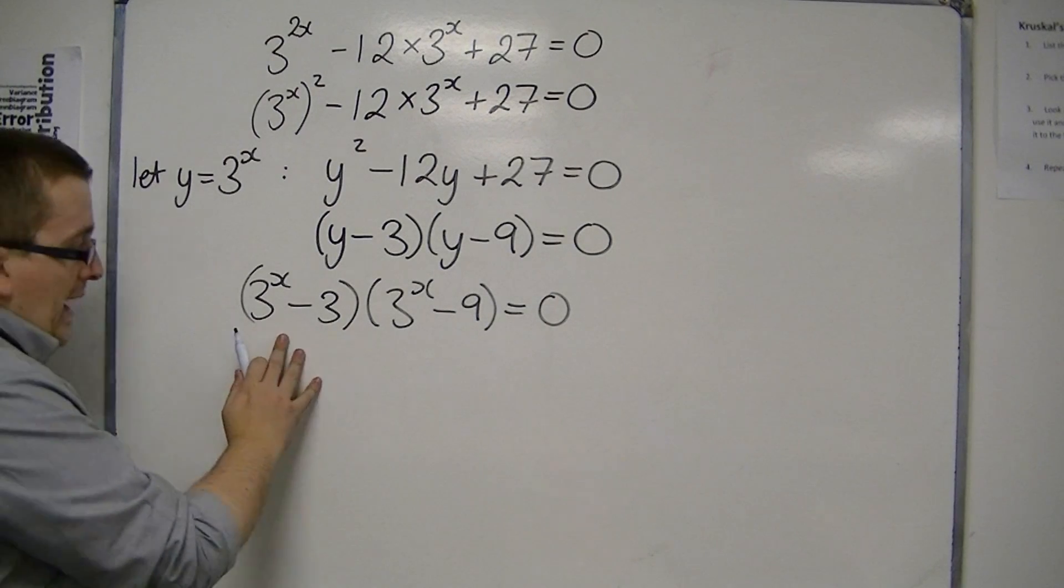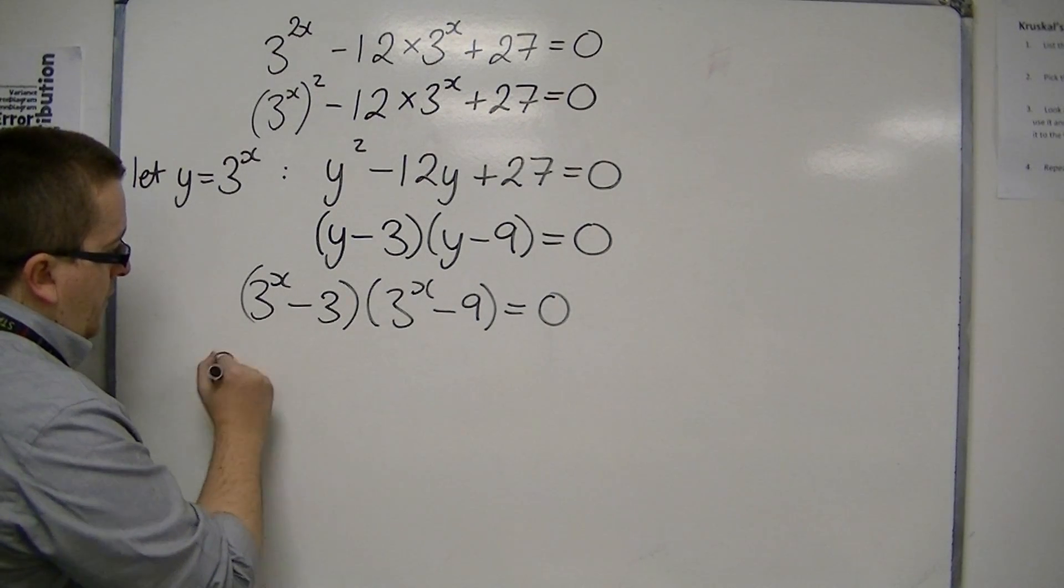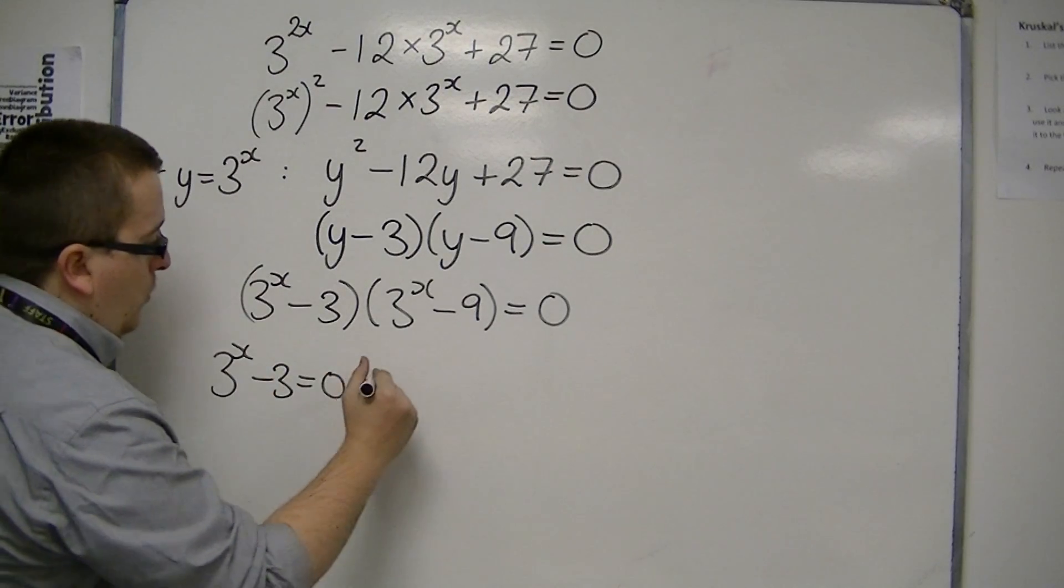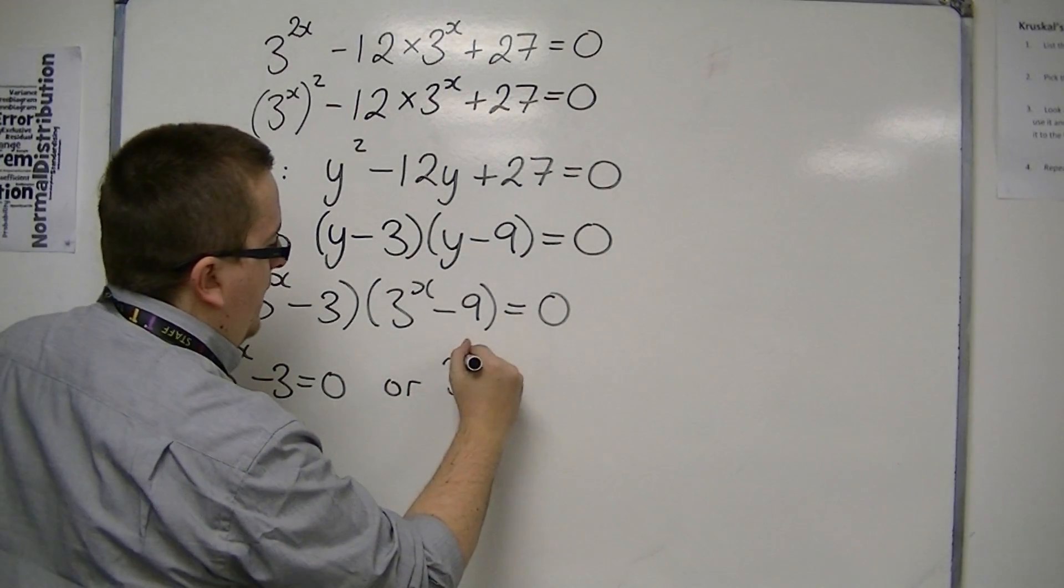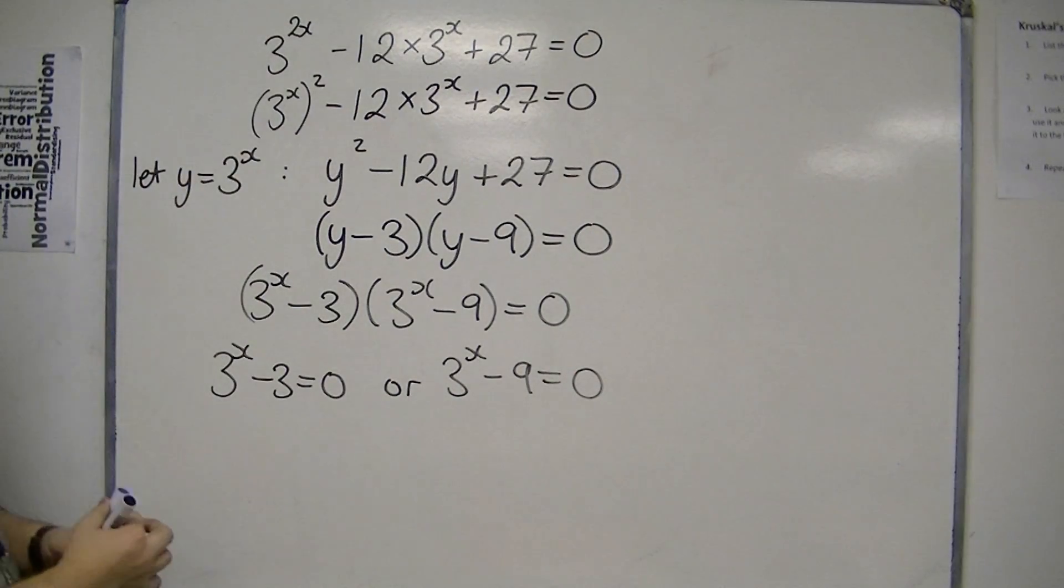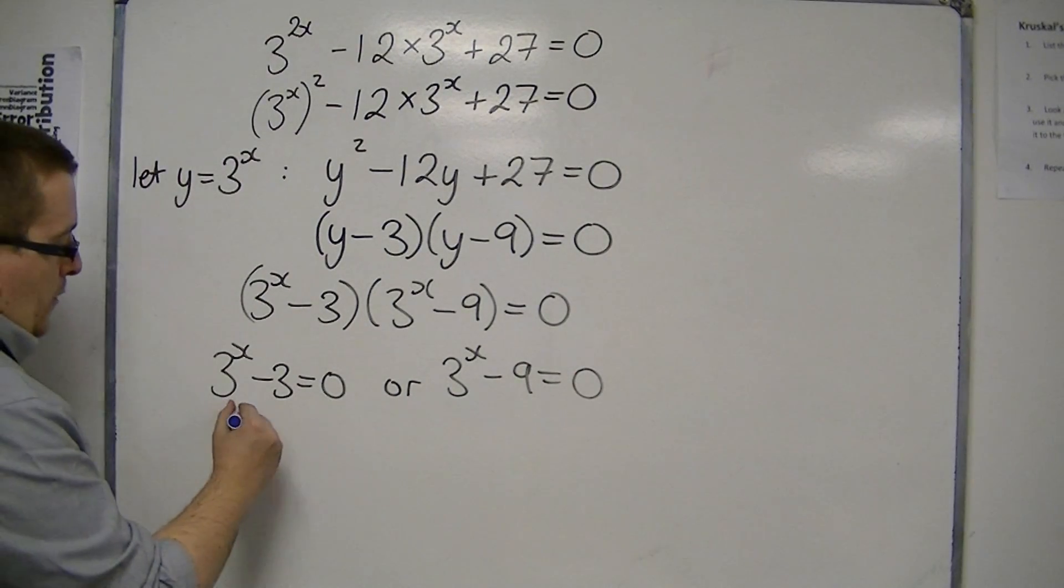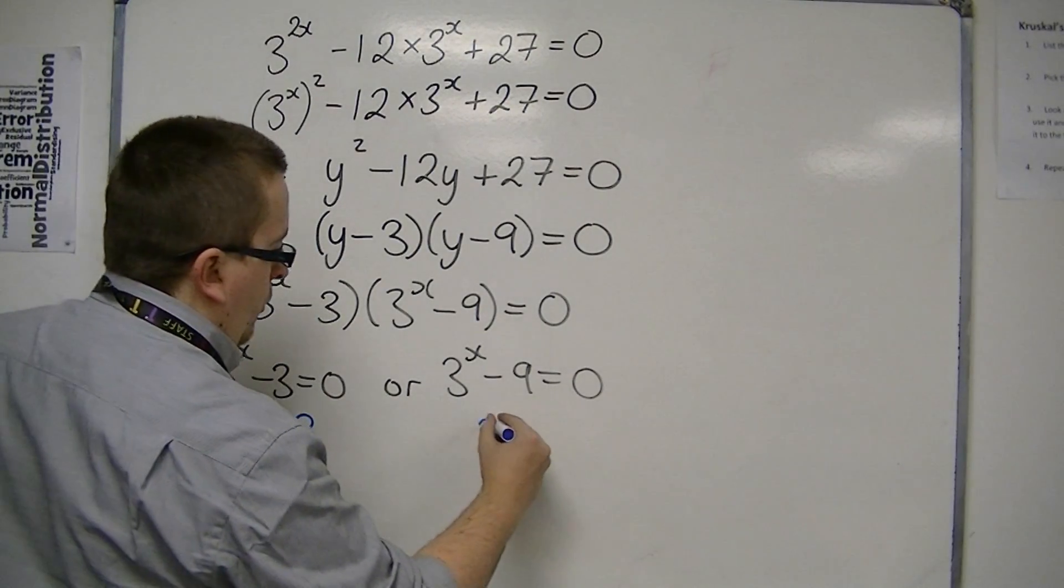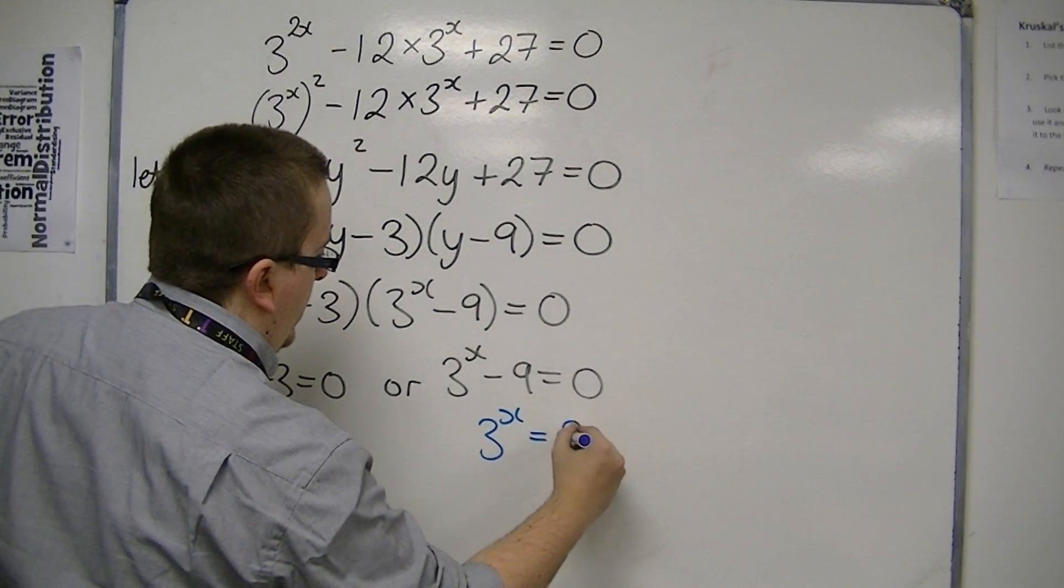That would mean that either 3 to the x minus 3 is 0, or 3 to the x minus 9 is 0. So in this case, 3 to the x must be 3, or 3 to the x in this case would have to be 9.